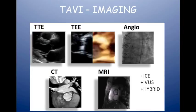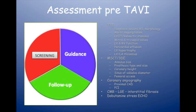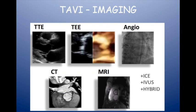Up until recently, there were two valves: the Edwards or Sapien valve, and the Medtronic CoreValve. More recently, some more valves have come onto the Australian market — the Portico valve from St. Jude, which looks more or less like the Medtronic CoreValve, and the Boston Lotus valve. Soon we'll also get the Evolute and the Sapien III, so there'll be six different valves.